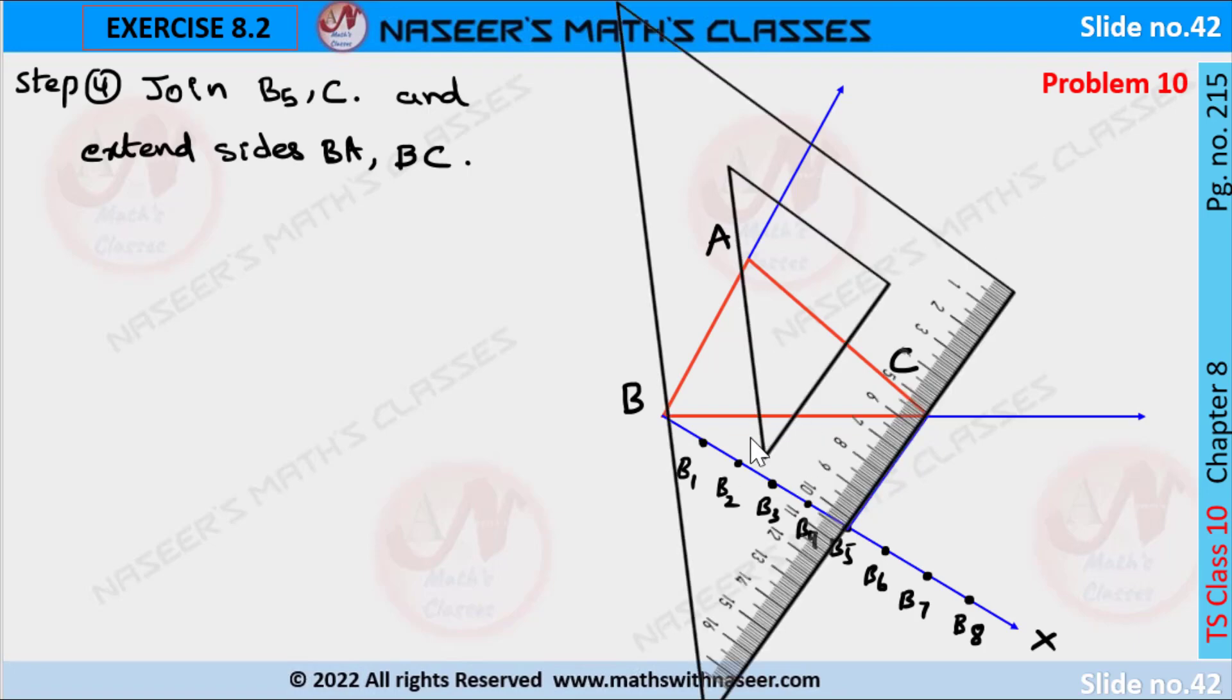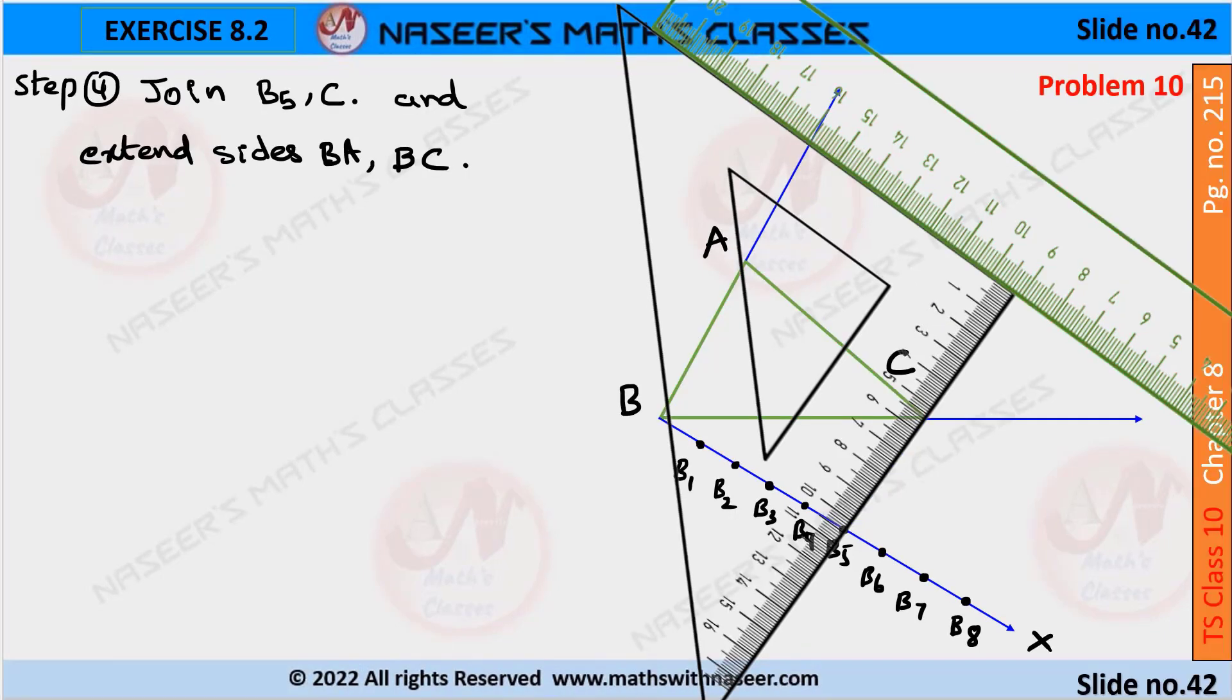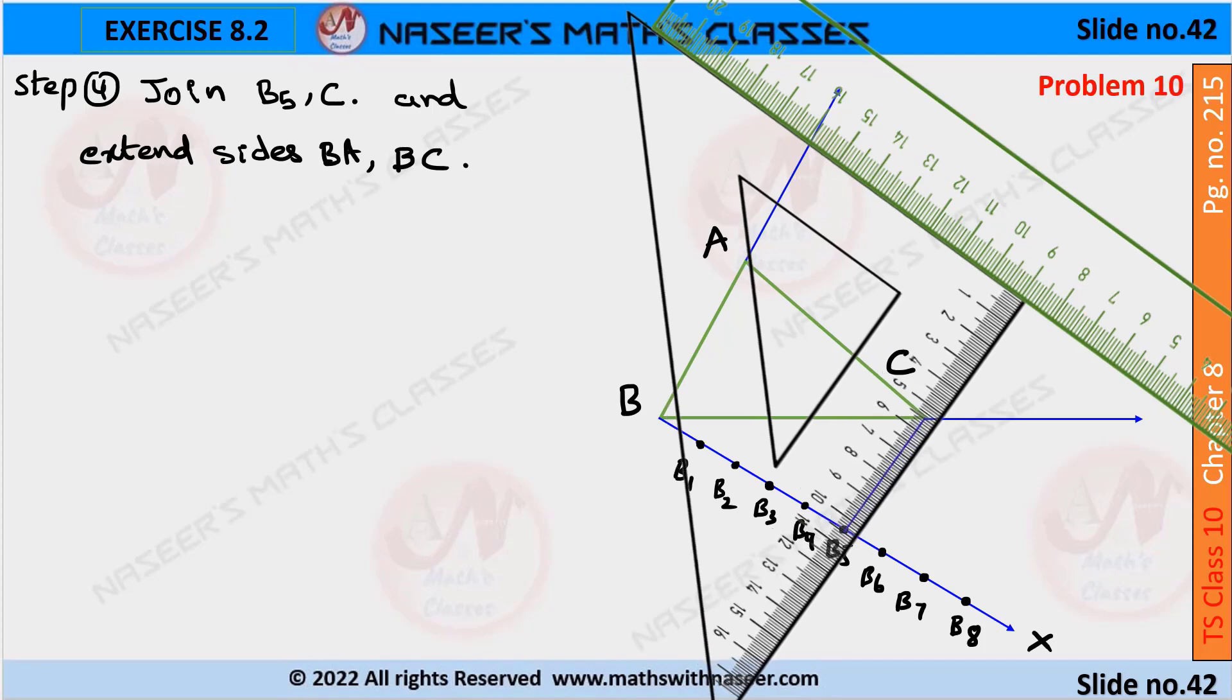Next we have to place a set square on B5C as shown in the figure. Next we have to place the scale beside the set square. Then we have to move the set square along with the scale up to point B8.